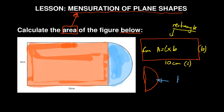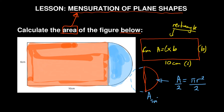The area of a full circle is πr². A semicircle is half of a circle, so you divide the area of a full circle by 2. Therefore, the area of a semicircle is πr² over 2.